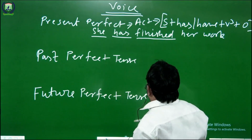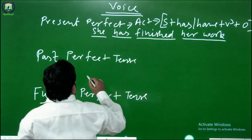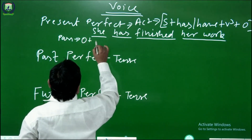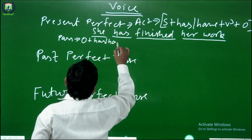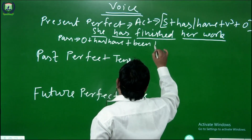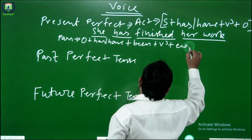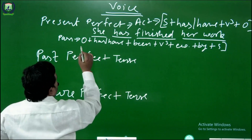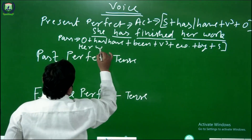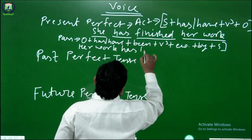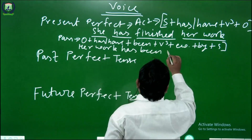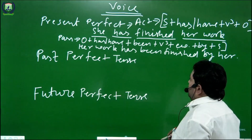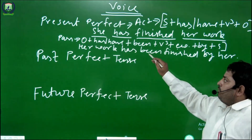Here the third form of the verb is 'finished' and here it is the object. Now the structure of passive voice will be: object plus has or have plus been plus third form of the verb plus extra word plus by plus subject. The passive voice of this sentence will be: her work has been finished by her.